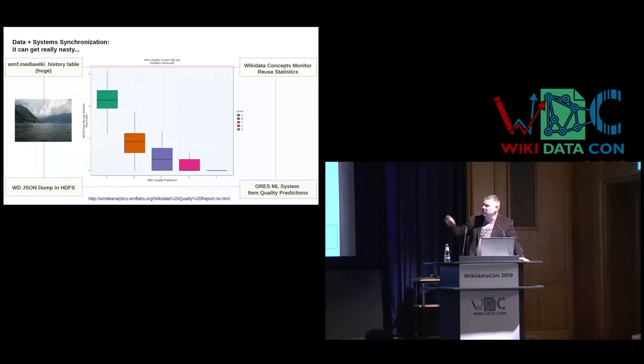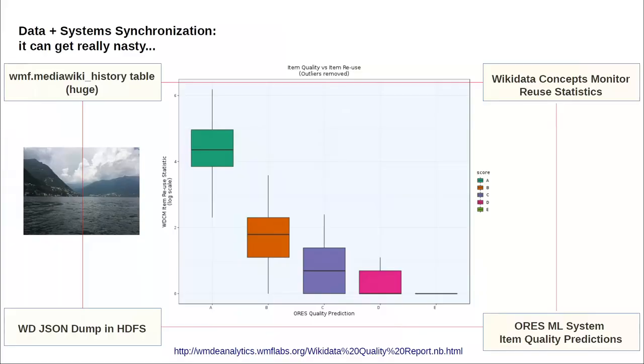To produce it, we had to rely on quality predictions from the ORES machine learning system developed by Aaron Halfaker and the scoring platform, combine that with the Wikidata Usage Monitor reuse statistics, the full revision history of all Wikipedias available in one huge big-data table called MediaWiki History in the data lake, and also process the JSON dump in HDFS. So we're talking about four massive structures — two machine learning systems and two huge datasets — everything needing to work in sync to produce the quality report presented this year on wikidata.org.